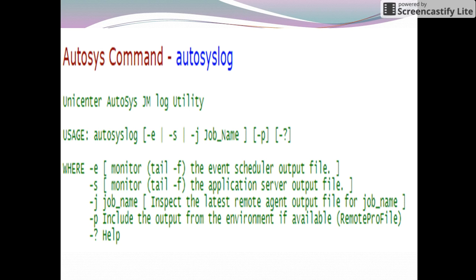This is the usage of the autosyslog command. There are options like hyphen-e, hyphen-j, and hyphen-s. The hyphen-e option is used to display the log of the event scheduler file. The hyphen-s option is used to display the log of the application server file. The hyphen-j option followed by a job name will display the latest remote agent output file for that job.